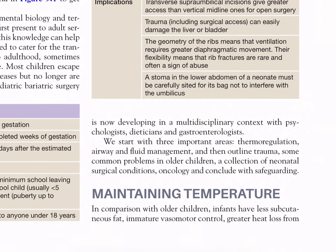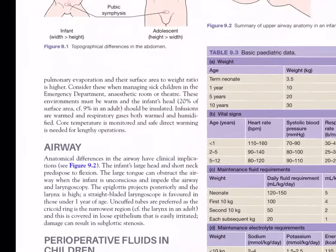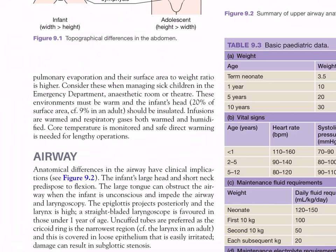Maintaining temperature. In comparison with older children, infants have less subcutaneous fat, immature vasomotor control, greater heat loss from pulmonary evaporation, and their surface area to weight ratio is higher. Consider these when managing sick children in the emergency department, anaesthetic room or theatre. These environments must be warm and the infant's head — 20% of the surface area circumference compared to 9% in an adult — should be insulated. Infusions are warmed and respiratory gases both warmed and humidified. Core temperature is monitored and safe direct warming is needed for lengthy operations.